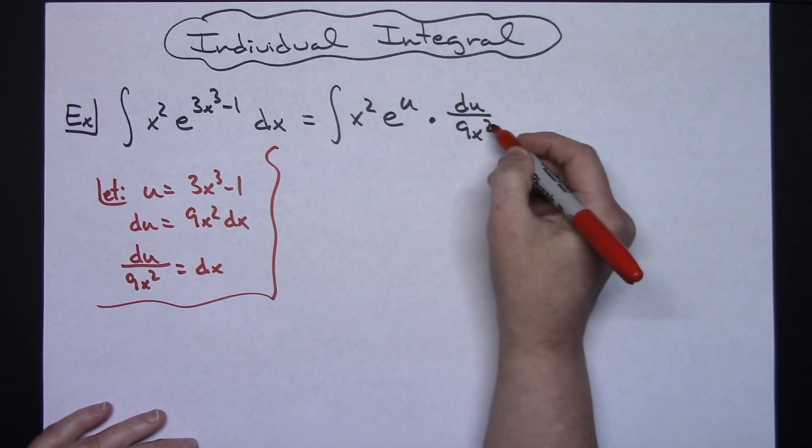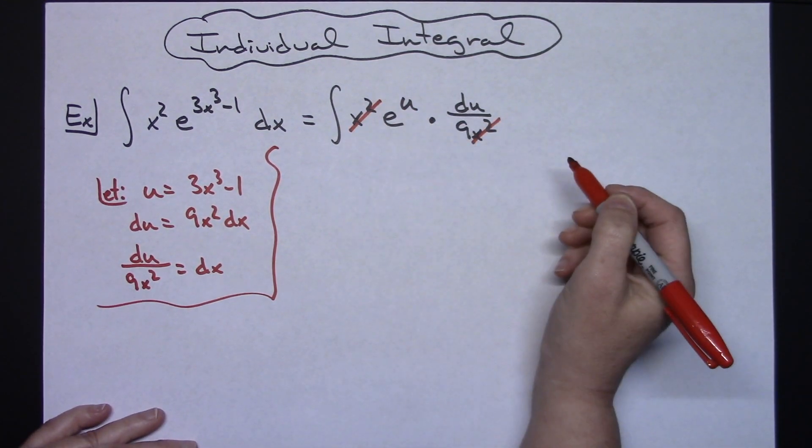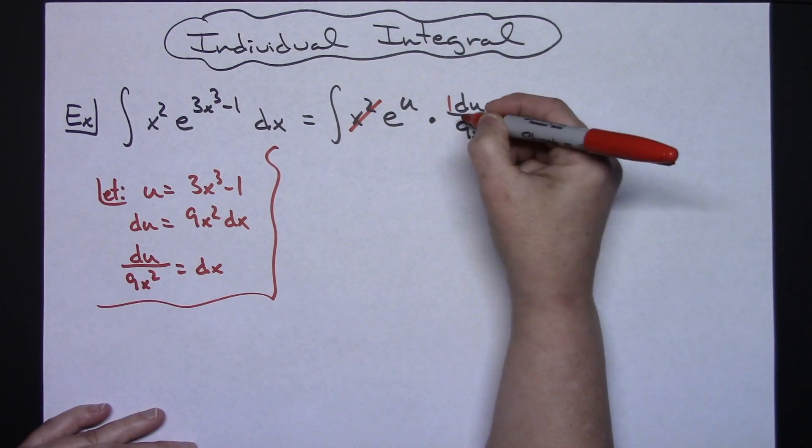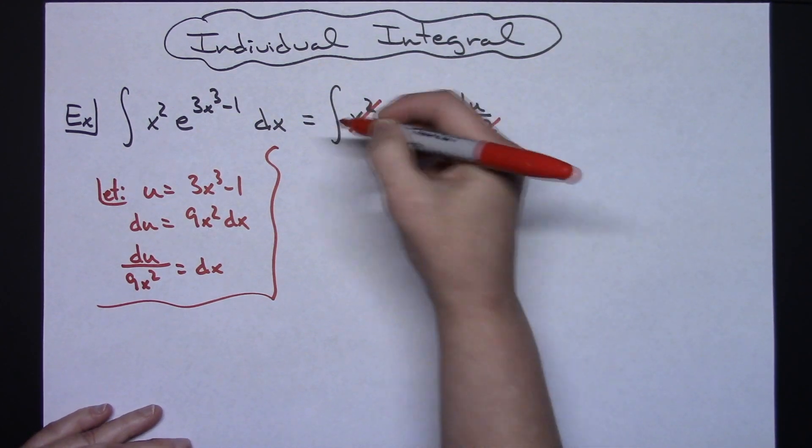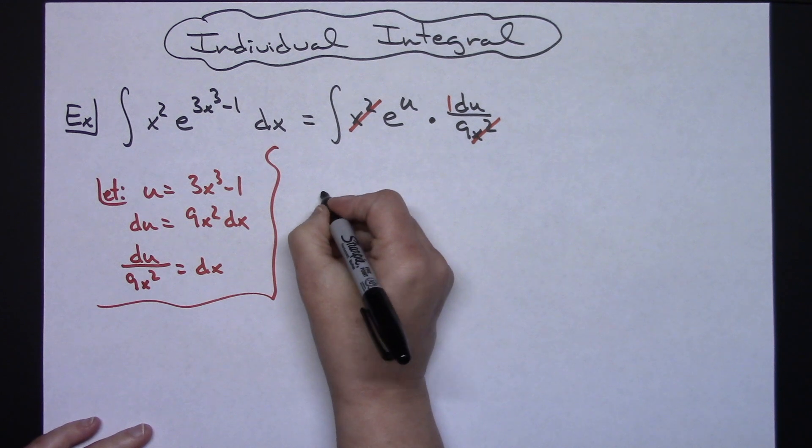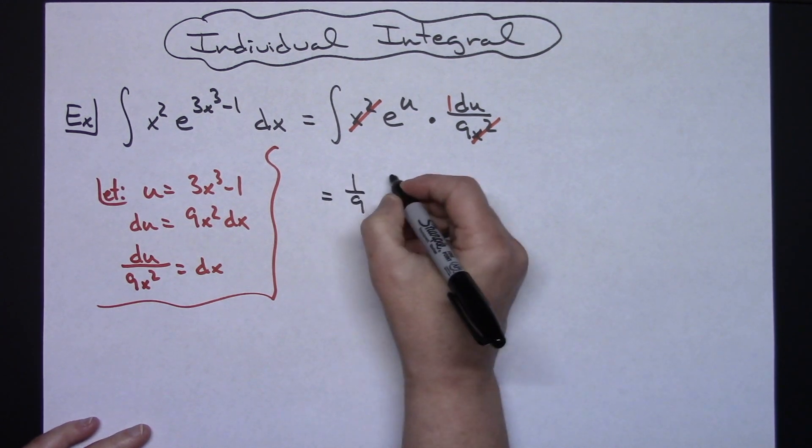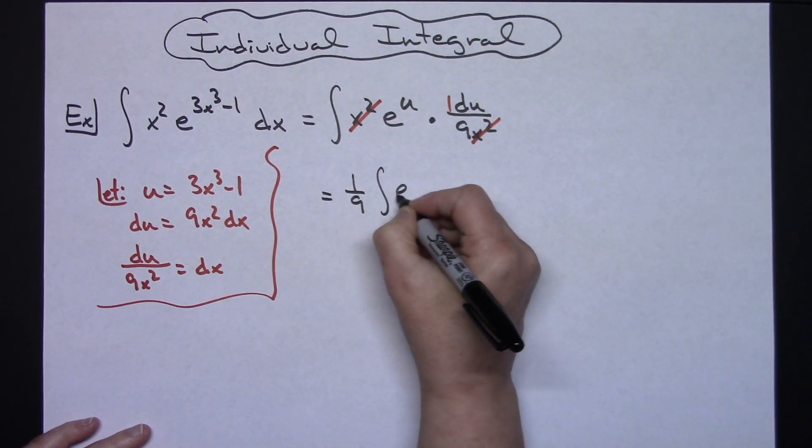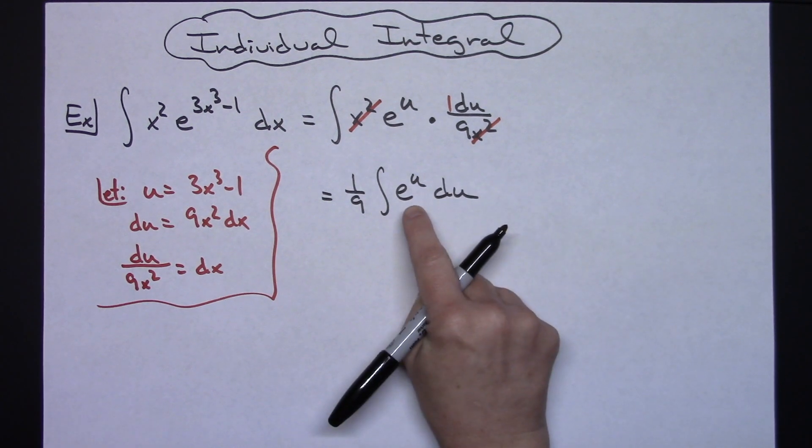What that's going to do is that's going to allow us to cross out those x squareds, and then with the imaginary one right there pulling out that 1/9th out in front of our integral. So we'll have 1/9th and then the integral of e to the u du.